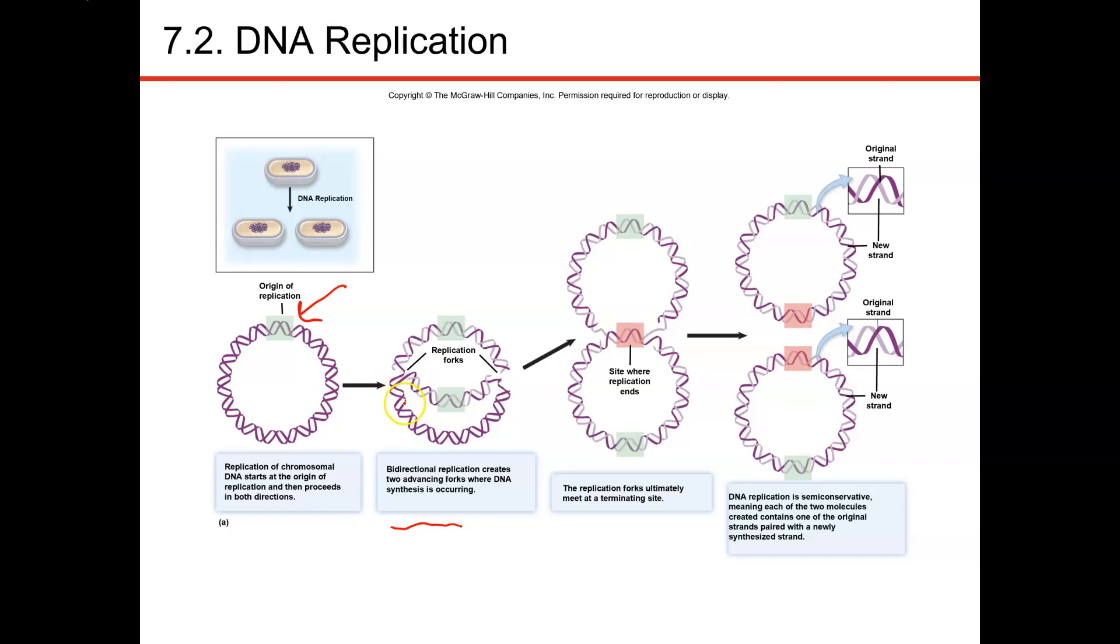This is bidirectional replication, which produces a replication fork on both sides. As the fork opens on each side, allowing your DNA polymerase to produce complementary strands, they will eventually meet together at a region known as the terminator site. When they hit that terminator site, then the two chromosomes come apart.